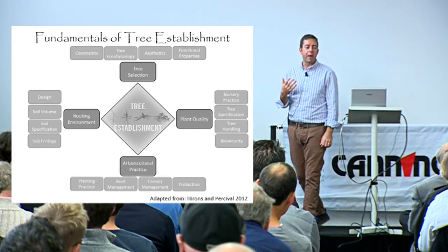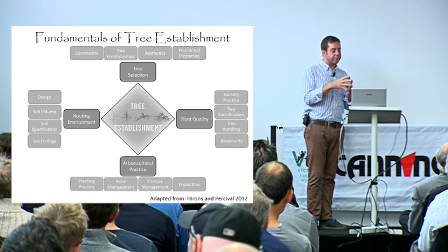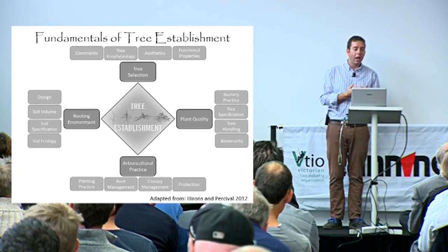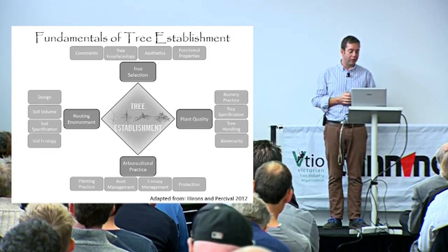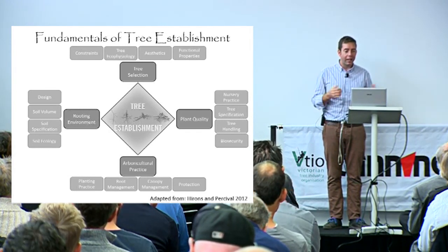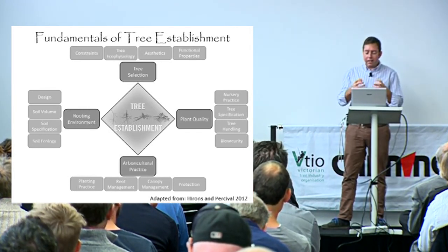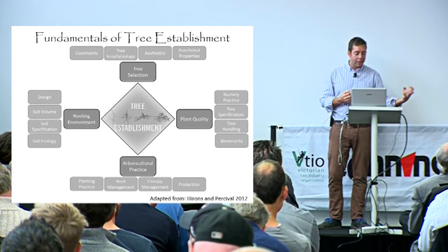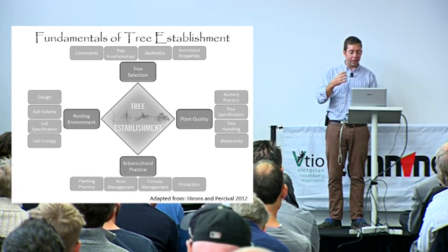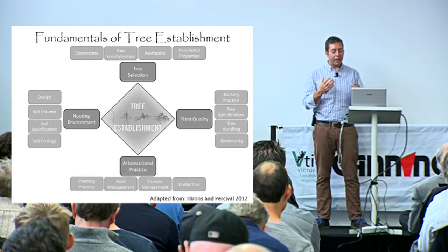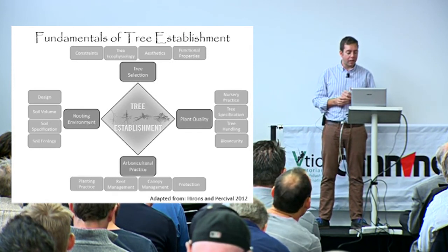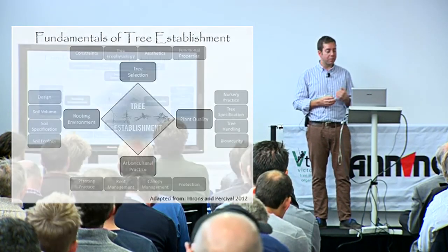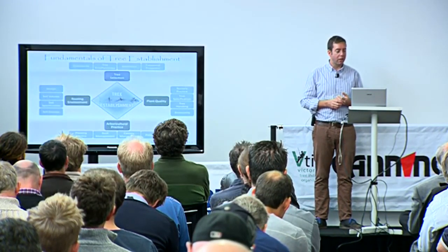That brings us back to the summary. If we don't have all of those things under consideration, our establishment rates will likely continue along the 25% failure rate or worse in many cases. If we take out any one of those elements from the diamond — the good quality rooting environment, the plant quality, planting it correctly, the tree selection — if we ignore any one of those things, we certainly struggle to get good establishment and we struggle to receive the ecosystem services that trees promise us for our landscapes.